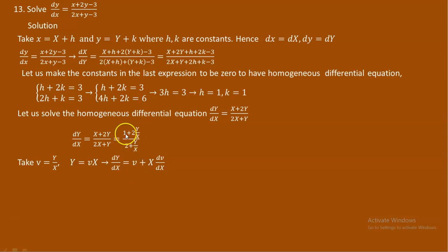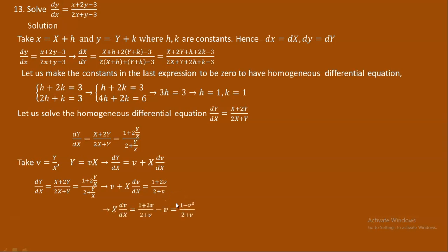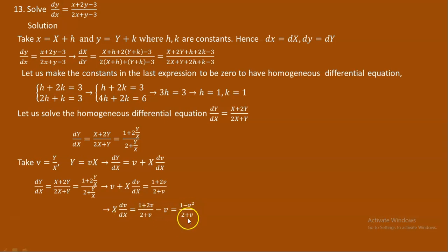In place of dY over dX, we substitute v plus X dv over dX, and then (1 plus 2v) over (2 plus v). Everything is now written in terms of v and capital X. Rearranging, X dv over dX equals (1 plus 2v) over (2 plus v) minus v, which simplifies to (1 minus v squared) over (2 plus v).